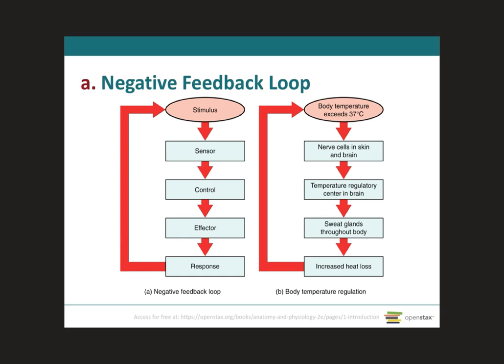Control centers in the brain and other parts of the body monitor and react to deviations or variations from ideal homeostasis using negative feedback. Therefore, negative feedback is a mechanism that reverses a deviation from the set point. In other words, negative feedback maintains body parameters within their normal range. The maintenance of homeostasis by this process of negative feedback goes on throughout the body at all times, and an understanding of this mechanism is fundamental to an understanding of human physiology.